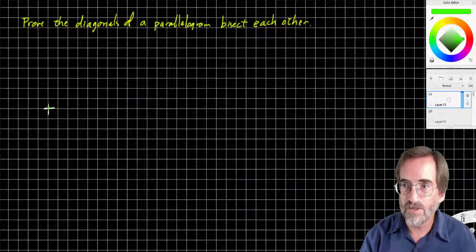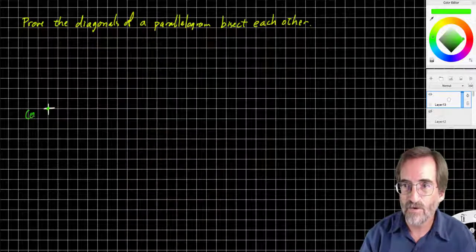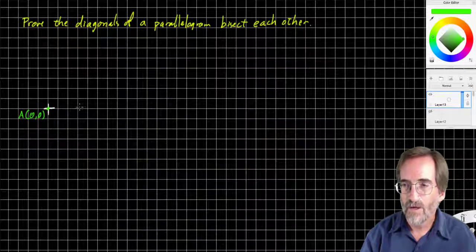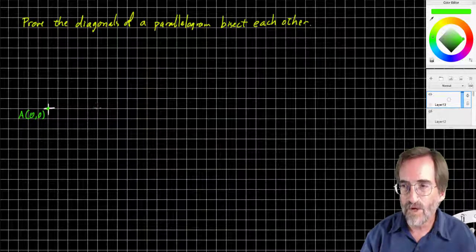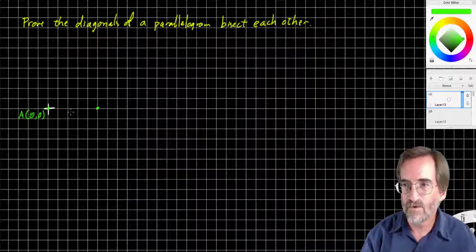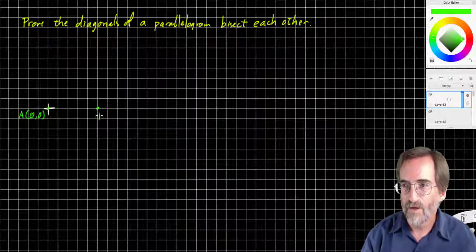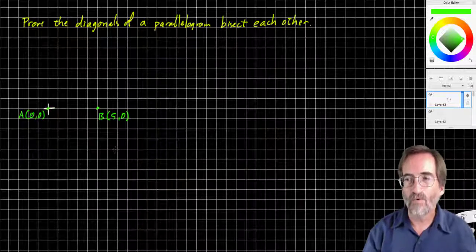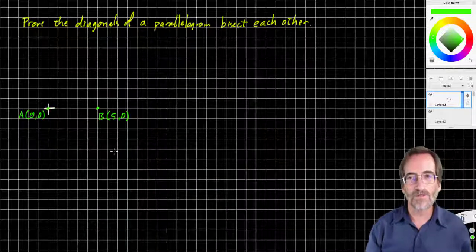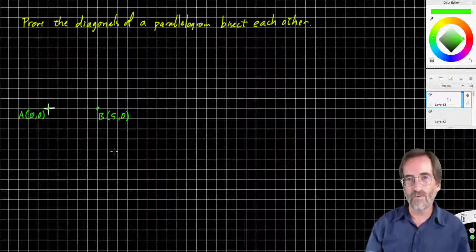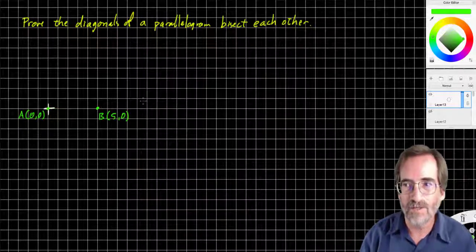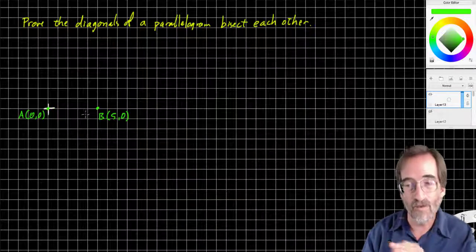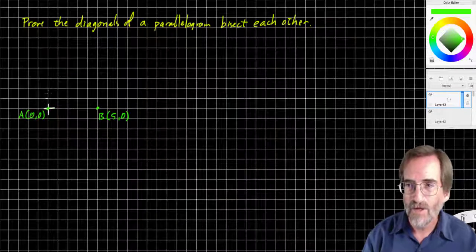Let's start with zero, zero. That we'll call point A. Point B, I'm gonna go to the right five units. One, two, three, four, five. So B is at five, zero. Now one of the things you gotta do, you gotta make sure you use different numbers.